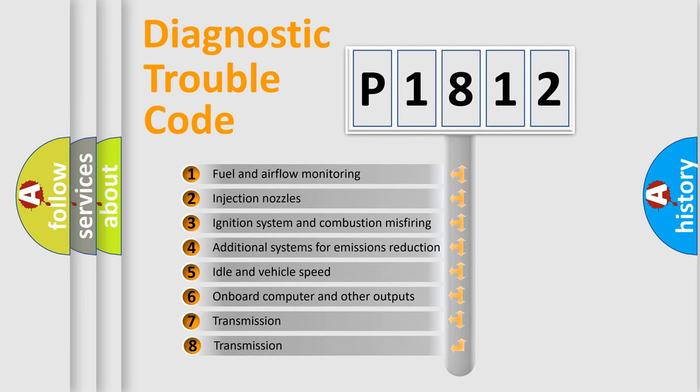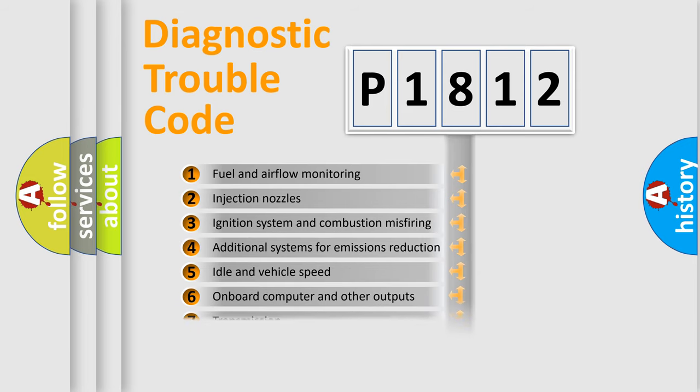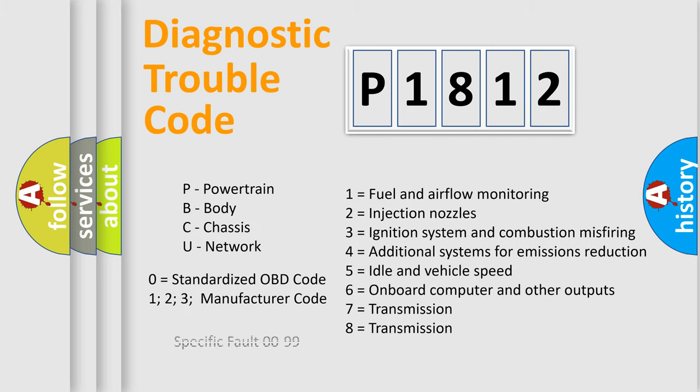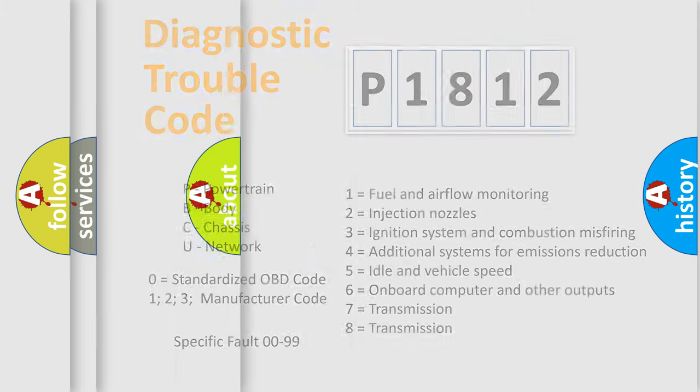The third character specifies a subset of errors. The distribution shown is valid only for the standardized DTC code. Only the last two characters define the specific fault of the group. Let's not forget that such a division is valid only if the other character code is expressed by the number zero.